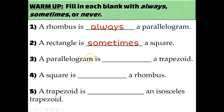A parallelogram is never a trapezoid. Those definitions are contradictory: a parallelogram has two pairs of opposite sides that are parallel, whereas a trapezoid has exactly one pair of opposite sides that are parallel. So you can't have both — a parallelogram will never be a trapezoid.